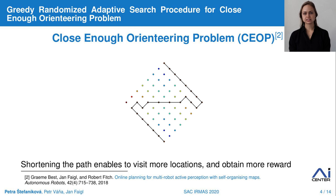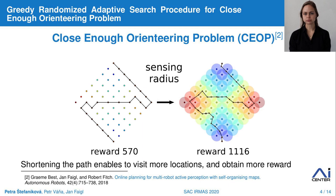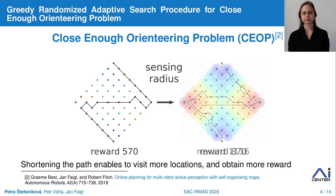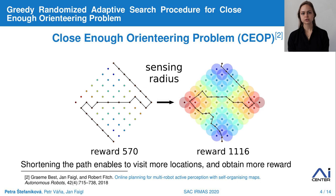The rewards are depicted in colors where red represents the most rewarding ones and blue is for the least rewarding ones. The initial and final location is fixed. Relatively recently, an extension of OP has been introduced to encounter the sensing radius, which allows shortening the path and thus increasing the collected reward. This generalization is called the Close Enough Orienteering Problem, denoted CEOP, where the locations expand to the disk sensing area. The original OP is strictly combinatorial, but the CEOP contains continuous optimization of a path connecting the selected sensing areas.